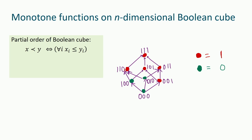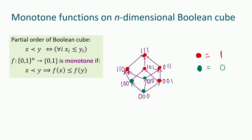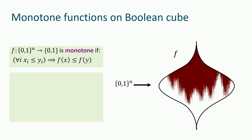What's a monotone function? In a monotone function, if x is less than y, then f(x) must be less than or equal to f(y). That's a monotone function in dimension 3. Notice that the number of nodes is 2 to the dimension. I just want to make it clear because there are lots of n's in this talk.